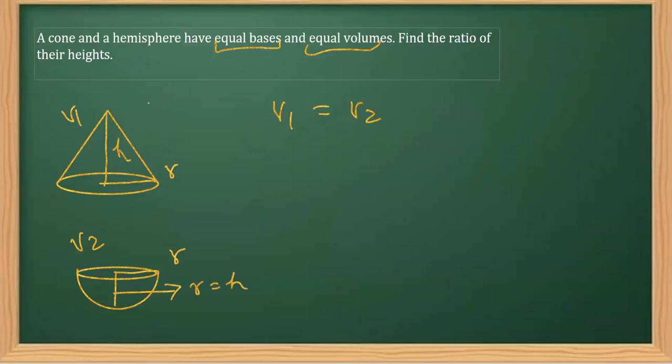Now if you read this question further, it says we have to get the ratio of their heights. That means h, which is the height of the cone—as you can see the cone comes first, and that's why I've taken the height of the cone first—and then the height of the hemisphere, which I said is its radius only. This is what we are required to find out.